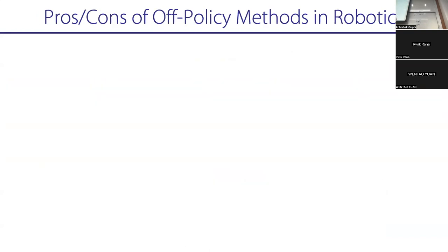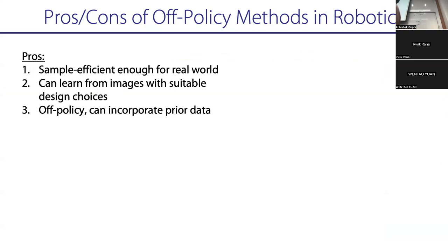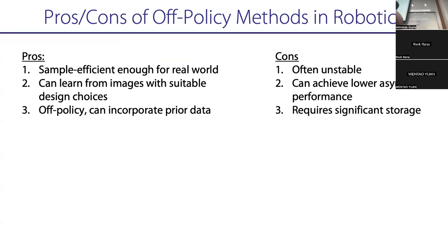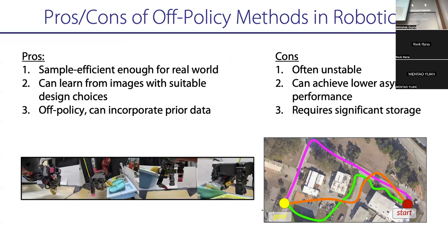To provide perspective before moving to model-based RL: the pros of off-policy RL are that it's sample-efficient enough to learn in the real world, it can learn from images with some design choices, and it's off-policy so you can incorporate prior data like demos and simulation. The cons are that it's often unstable, sometimes achieves lower asymptotic performance than PPO, and requires significant storage. If you really want a difficult task to work in simulation, use on-policy methods. If you want to do things in the real world, use off-policy methods.